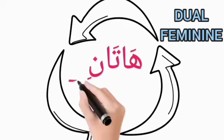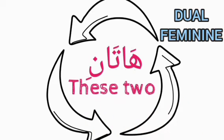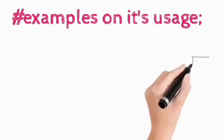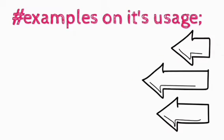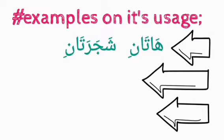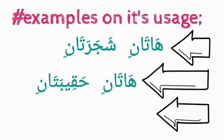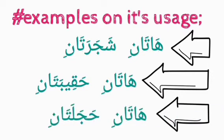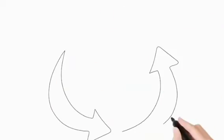We also have the dual form hatani, which means 'these two'. Examples on its usage: hatani shajaratani — these are two trees; hatani hakibatani — these are two bags; hatani hajaratani — these are two stones.